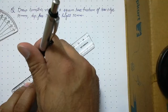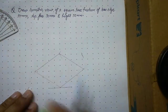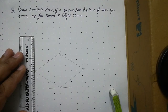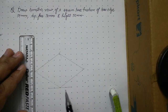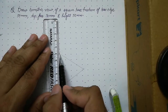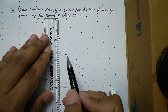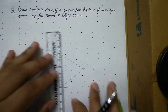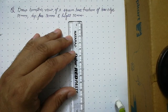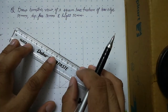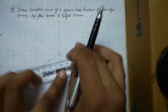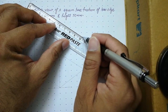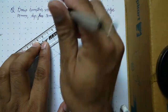Keep everything thin and erase the extensions. We are now ready with the base of the cube. Draw the vertical height lines of 50 mm from all four corners — use your linear scale carefully. Then join all the top points to complete the isometric of the cube.